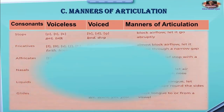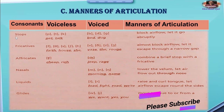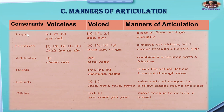Here is a complete chart of all the types of manners of articulation. Number one is stop sounds. These sounds are pronounced by blocking airflow and letting it go abruptly — we block our mouth and abruptly release the sound. Such sounds are known as stop sounds in English.